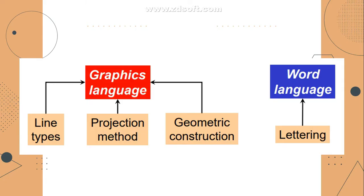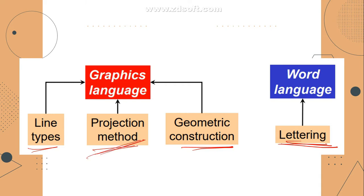In an engineering drawing, we divide it into two elements: the graphics language and the word language. In the word language, we can further identify it as lettering, which was already tackled in part one. For the graphics language, this is composed of three: line types, projection method, and geometric construction. Line types were already discussed in the past lesson. In this part, we will focus on the projection method, and geometric construction will be on part three.